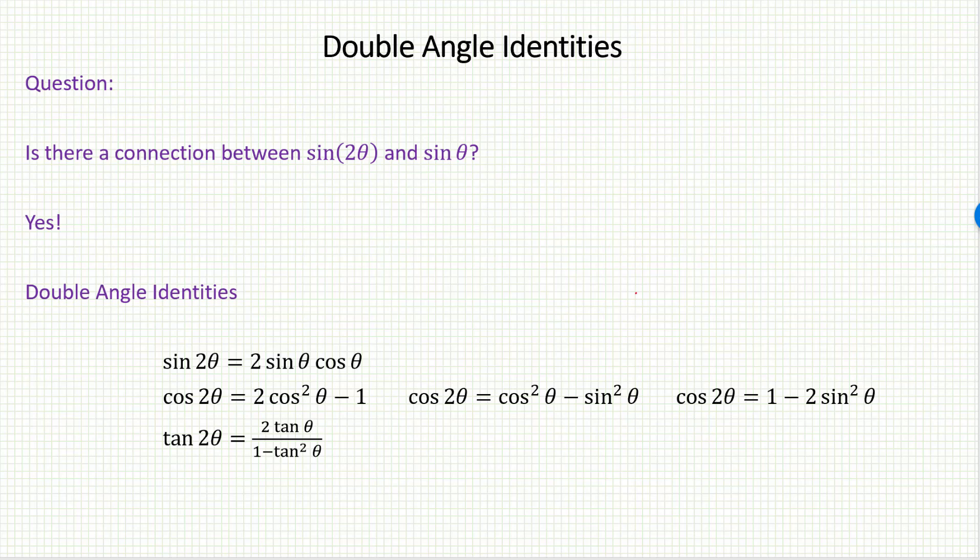Double angle identities. So we want to ask the question, is there a connection between the sine or cosine ratio of an angle and then the ratio of the double of the angle? And the answer is yes, which leads us to what are called the double angle identities.